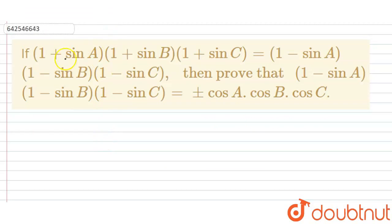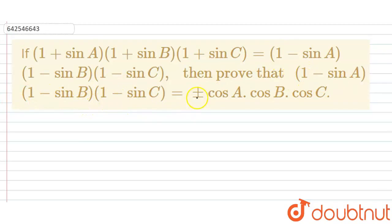Hello students! Today the question is: If (1 + sin A)(1 + sin B)(1 + sin C) = (1 - sin A)(1 - sin B)(1 - sin C), then prove that (1 - sin A)(1 - sin B)(1 - sin C) = ±cos A · cos B · cos C.